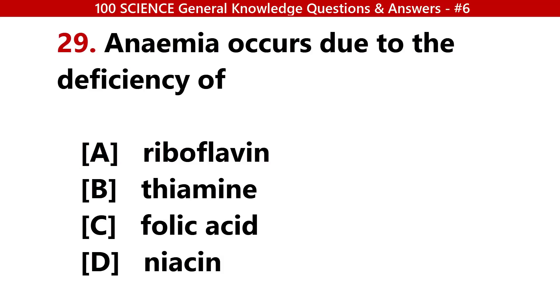Anemia occurs due to the deficiency of? Answer C: Folic acid.